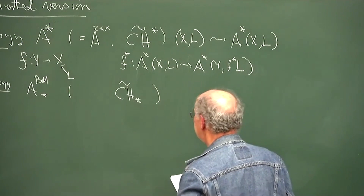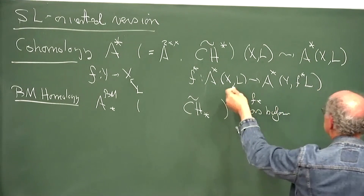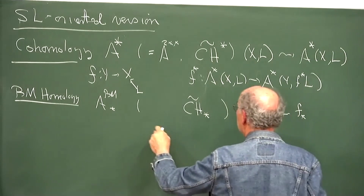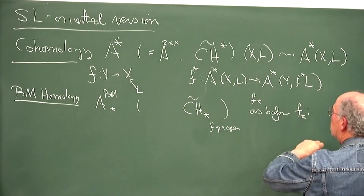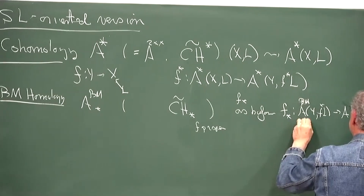Again you have a similar functoriality as before: F lower-star as before. Of course you have to put in the line bundle as well. When F is proper, you go from the twisted Borel-Moore homology in one twist to another, pulling back the line bundle appropriately.